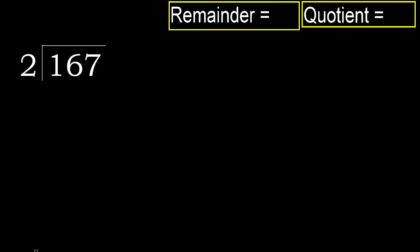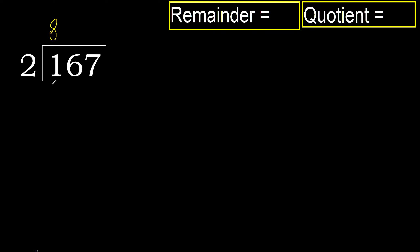167 divided by 2. 1 is less, therefore next. 16 is not less, therefore with 16: 2 multiplied by which number is nearest to 16 but not greater? 2 multiplied by 9 is 18, which is greater. Multiplied by 8: 16 is not greater. Ok, 16 minus 16 is 0. Next.